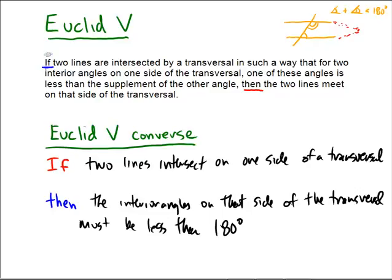So that's really what we're trying to show here. Essentially, if two lines intersect on one side of a transversal, this is kind of like saying that we have a triangle, isn't it?